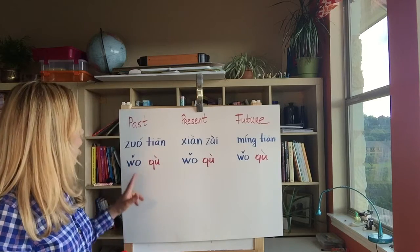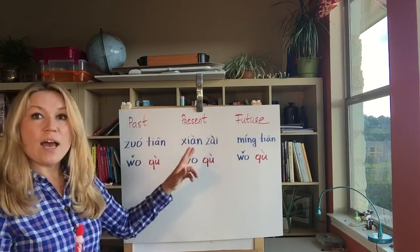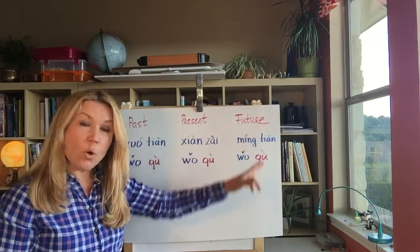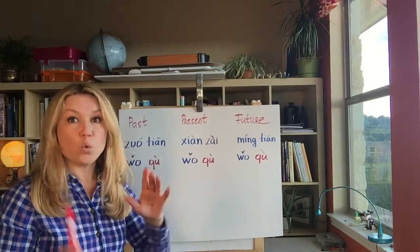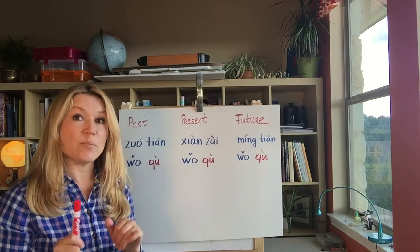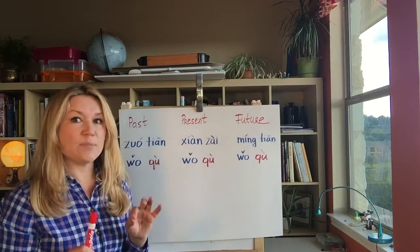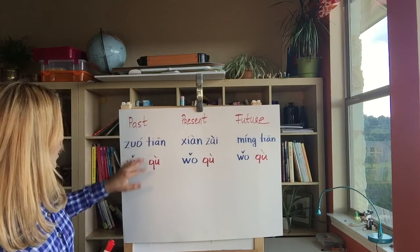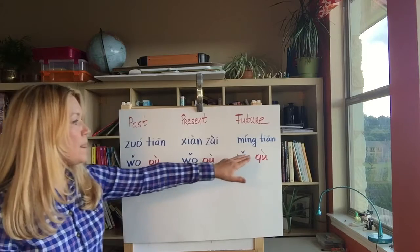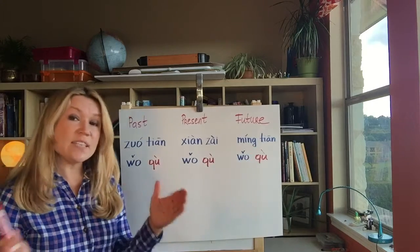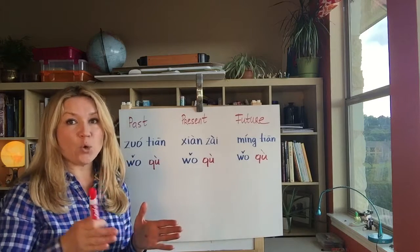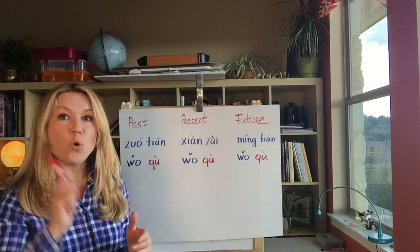When you say 'I went,' you say 'wǒ qù.' When you say 'I go,' you say 'wǒ qù.' When you say 'I will go,' you still say 'wǒ qù.' What changes is the lexeme — the word that describes time. 'I went yesterday,' 'I go today,' 'I will go tomorrow.' It's the same as if in English it sounded: 'I go yesterday, I go today, I go tomorrow.'